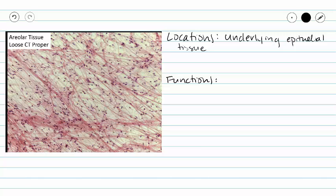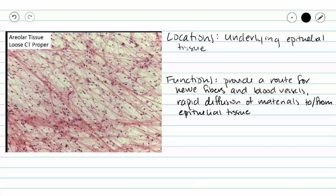Because the ground substance is fluid, it provides a great place for diffusion to occur between the capillaries inside the areolar loose connective tissue proper and the epithelial tissues on the other side. Our areolar tissue is always going to be attached to epithelial tissue and will lie deeper into the organism from the epithelial tissue, since epithelial tissue borders the outside world or lines internal spaces. So areolar tissue provides a route for blood vessels and some attachment for epithelial tissues to deeper tissues.